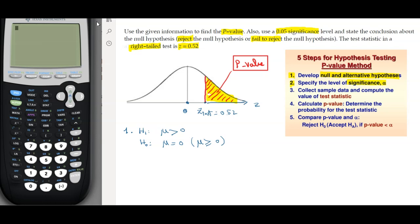Now for the second step, we're going to specify the level of significance which is the alpha, and that is the value over here. So this is 0.05, so that's going to be alpha equals 0.05.